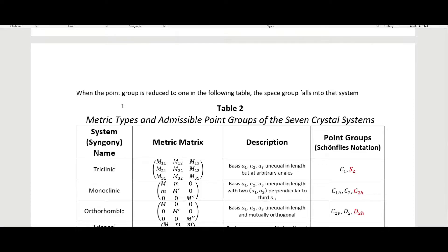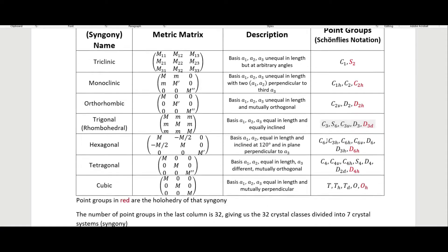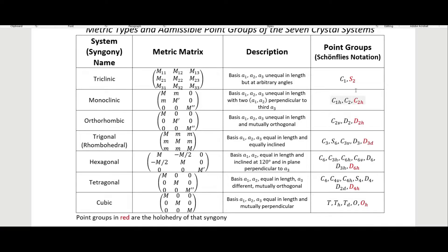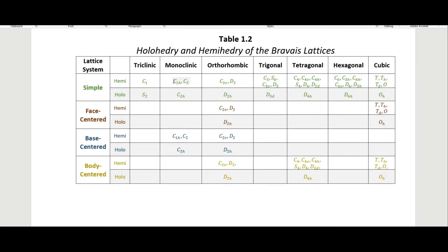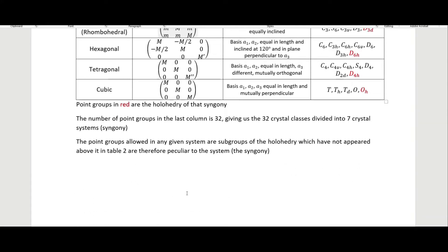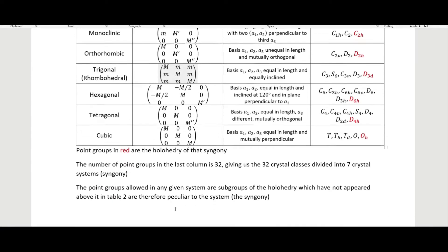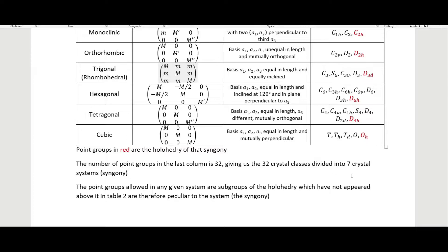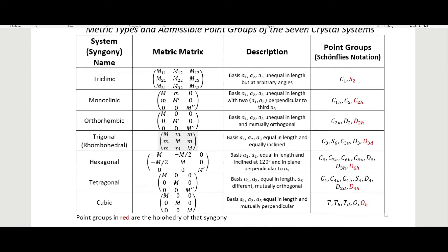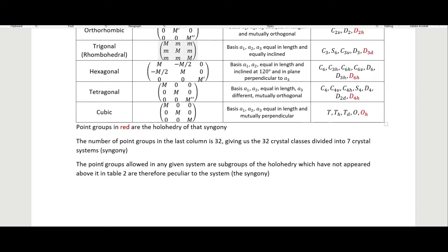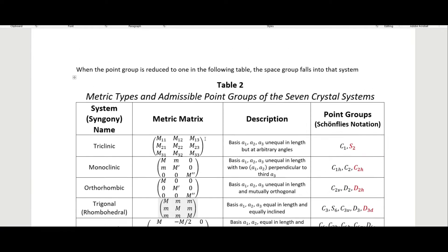When the point group is reduced to one in the following table, the space group falls into that system. The ones in red are the holohedry and the ones in black are the hemihedri. The total number of point groups in the last column is 32, giving us 32 crystal classes divided into seven syngonies or systems shown in the left column. The point groups allowed in any given system are subgroups of the holohedry which have not appeared in the table above it, and therefore are peculiar to that system.